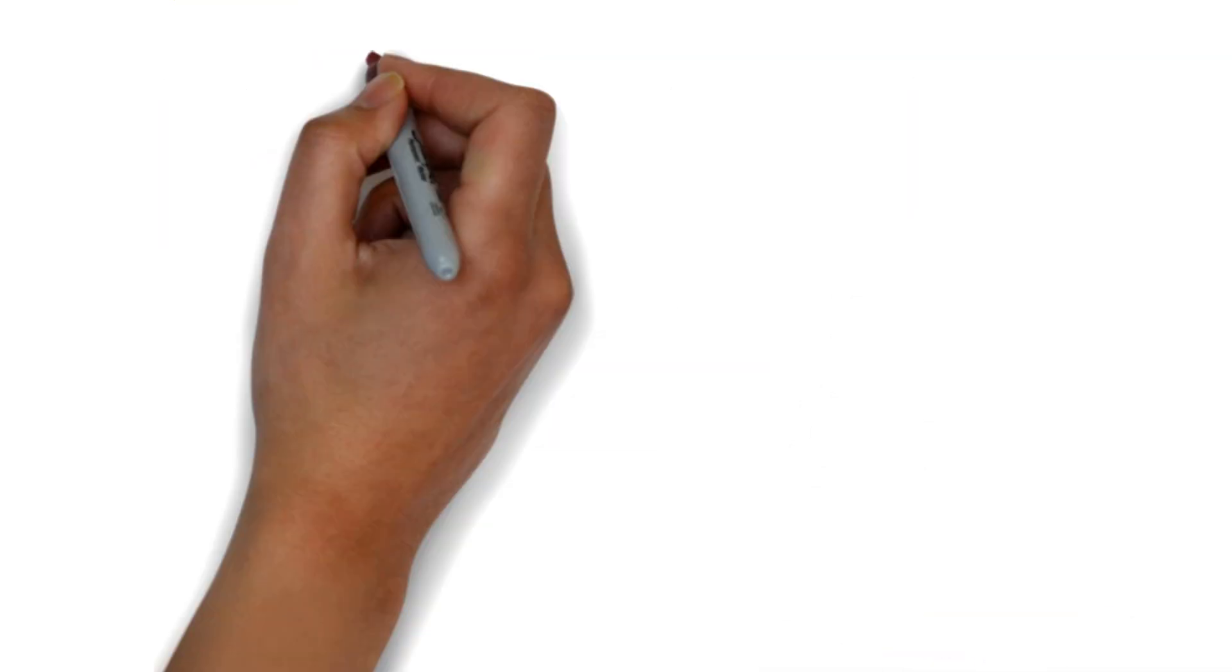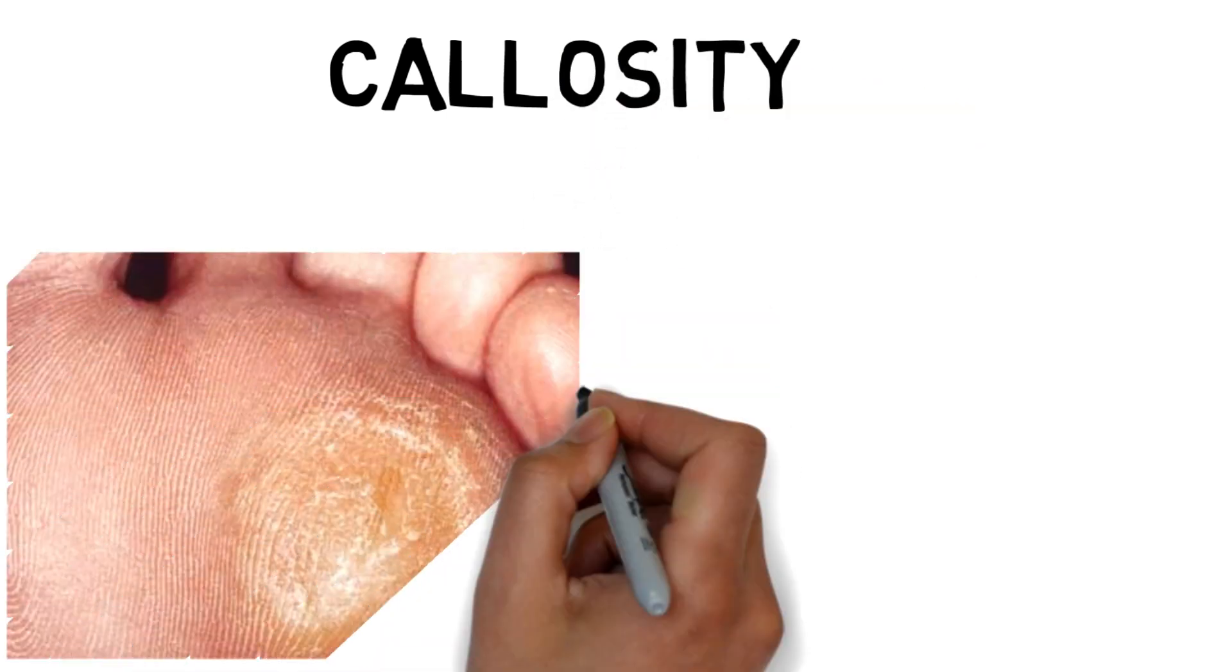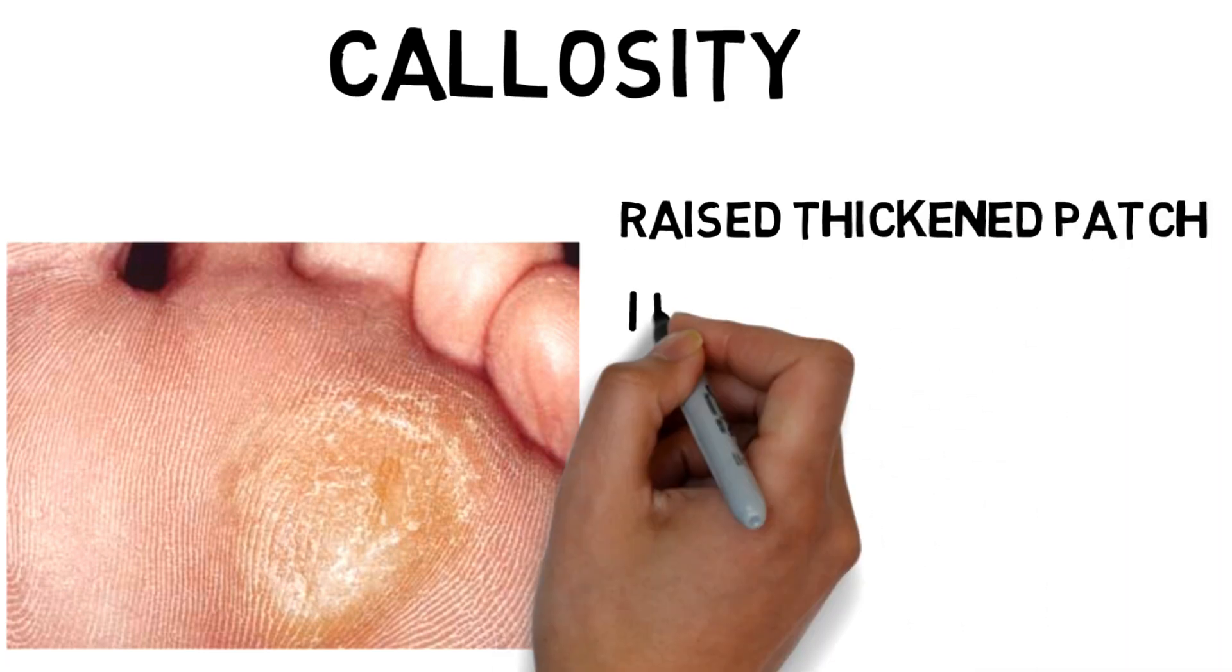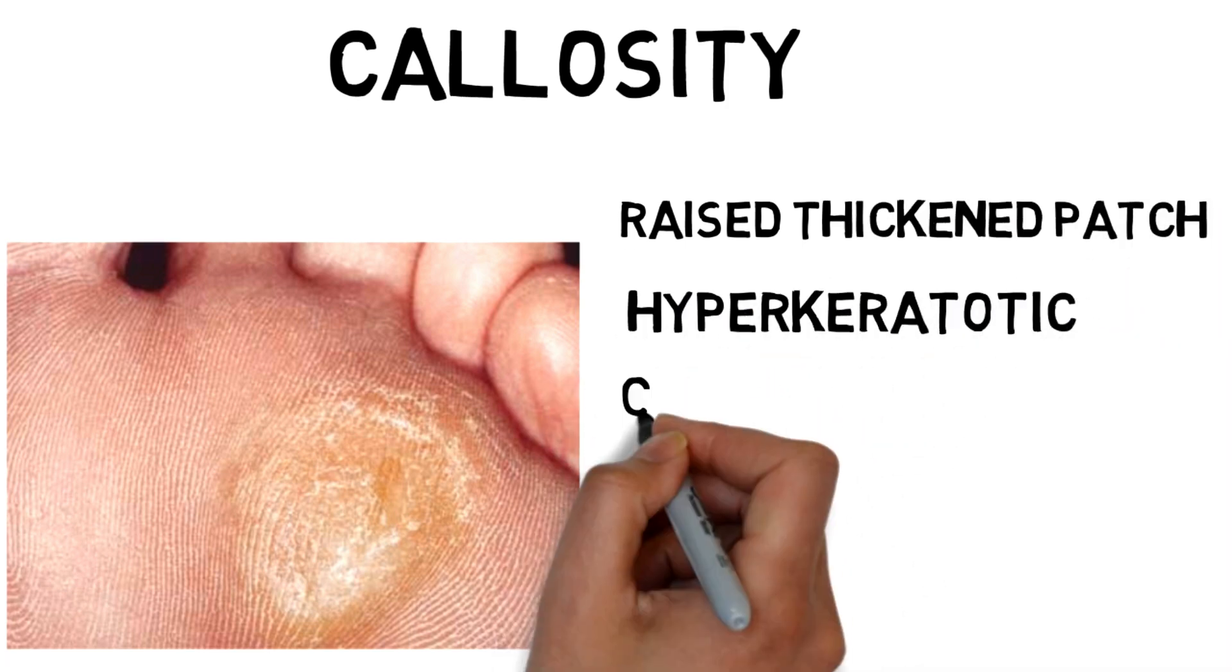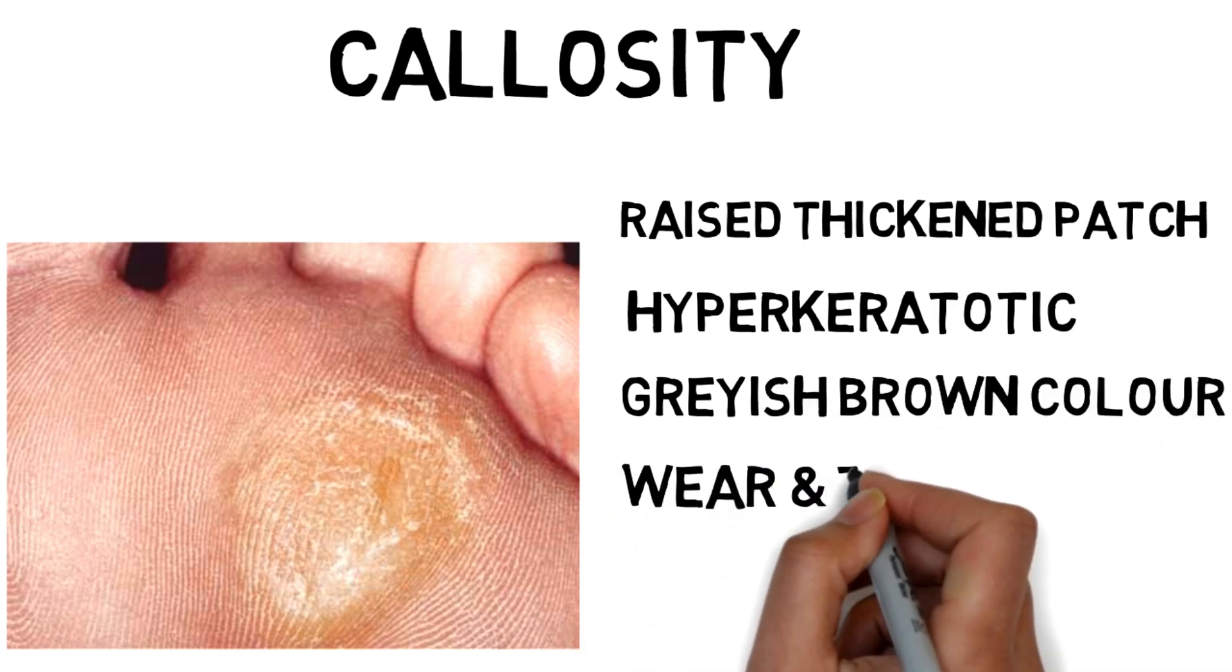Corns are different from callosities. As you can see the difference in the diagram, a callosity is a raised, thickened patch of hyperkeratotic skin that is generally grayish brown in color and occurs over an area of excessive wear and tear.